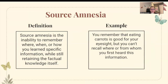Source amnesia is the inability to remember where, when, or how you learned specific information, while still retaining the factual knowledge itself. For example, you remember that eating carrots is good for your eyesight, but you can't recall where or from whom you first heard this. The instructor jokes that it was probably your grandmother — her mom always said 'eat your carrots' to improve your eyes, and here she is wearing glasses.